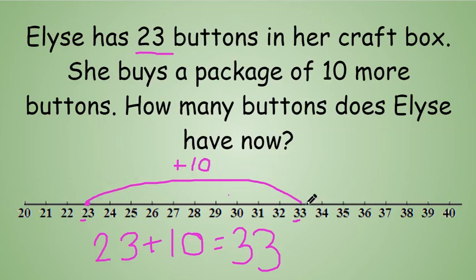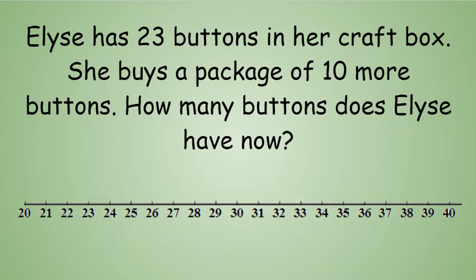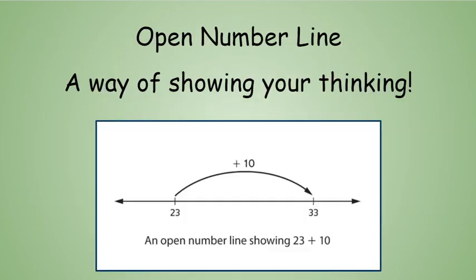How much easier it was to just jump by 10s! Now we showed this problem on a regular number line. What we're learning about today is an open number line. An open number line is blank — there are no numbers written on it until you write them. So it's pretty much what we did, but without any numbers already written, because you know that 23 plus 10 more is 33 because our 10s place changed. When you mentally do addition or subtraction but need to show your thinking, an open number line is a great way to help.